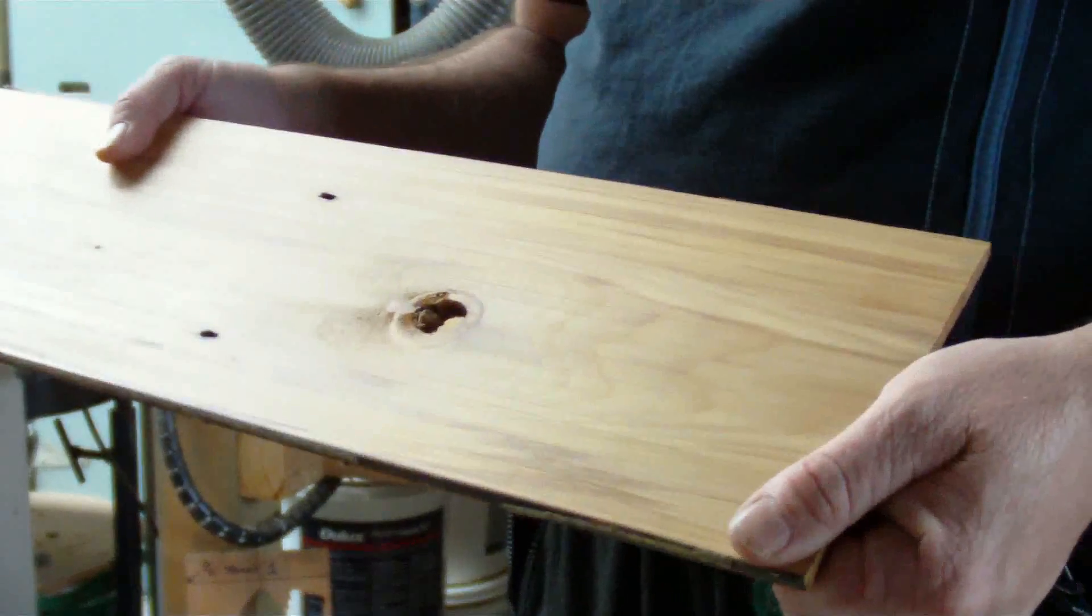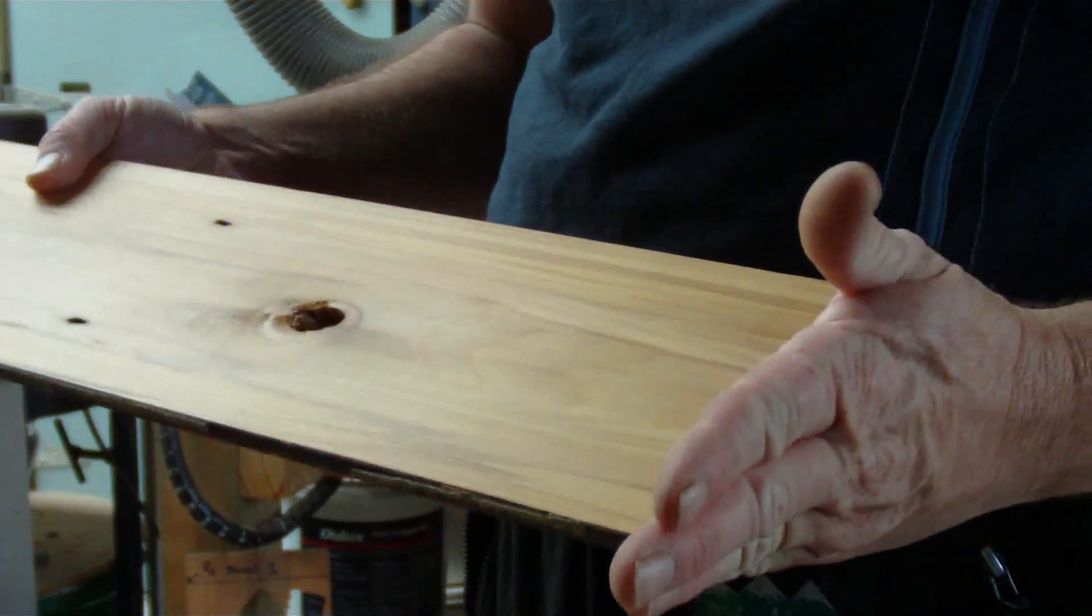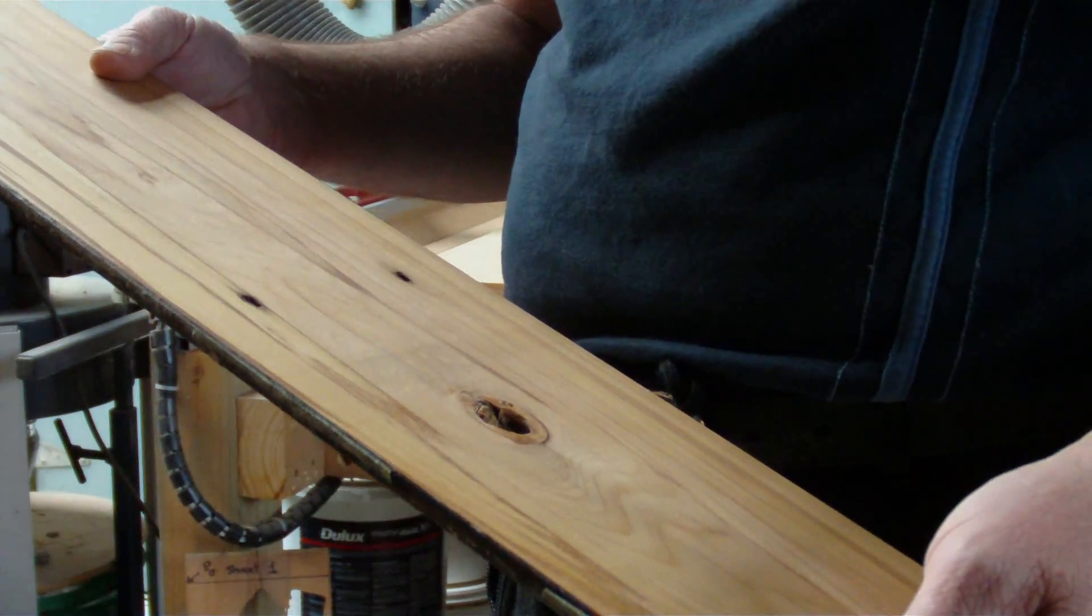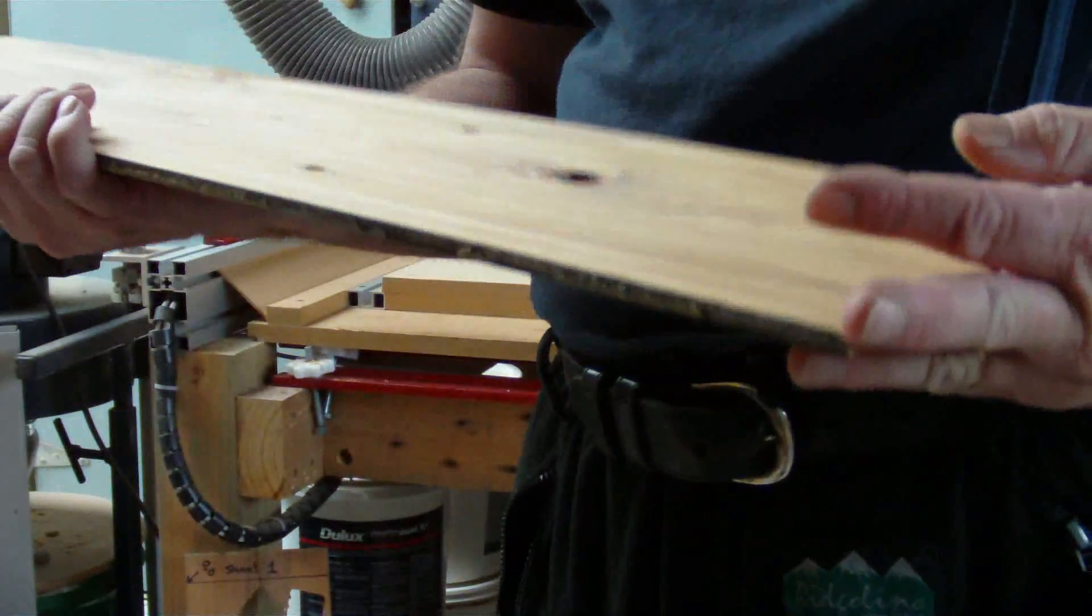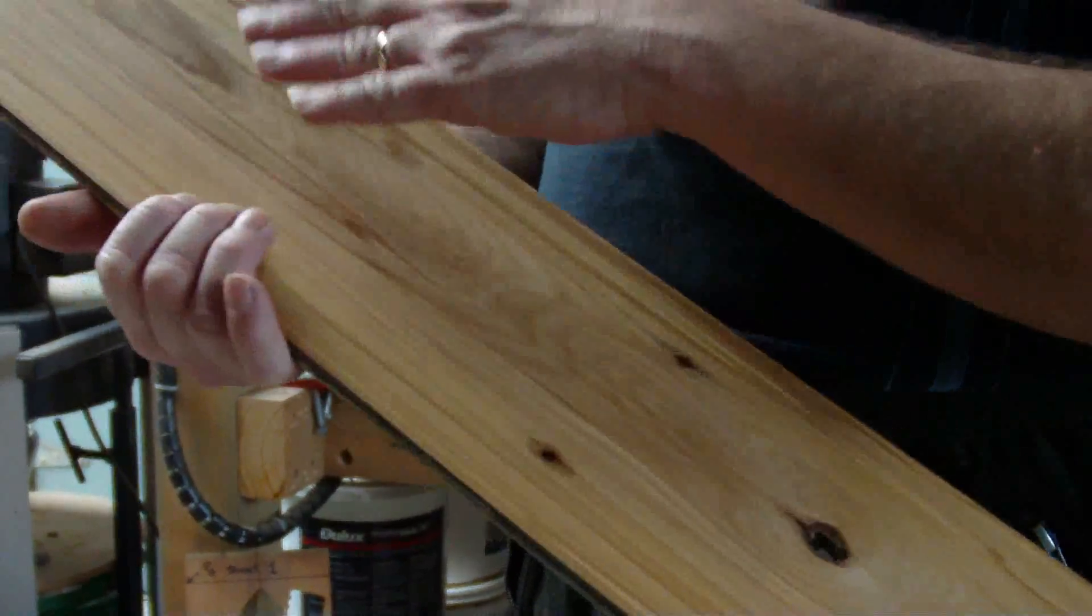Now if we're using this, if we're cutting our parts out by hand, this isn't a problem. We just lay a template on there, draw around it, cut it out and away we go. But I'm using a CNC machine and here's the problem. I have to somehow get my parts cut from here and avoid all the bits I don't want.